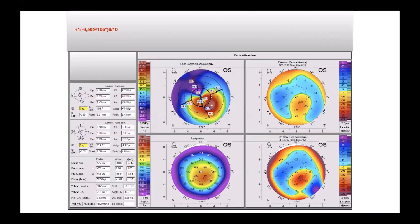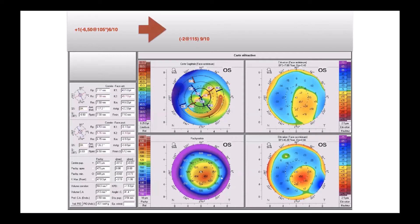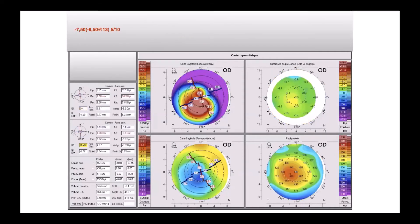Here is another example for a duck form — it's a little bit different, so the ring should be in the other sense. The result four months later shows astigmatism going from minus six to minus two. This is an asymmetric snowman.